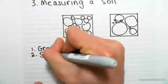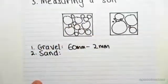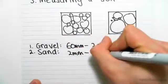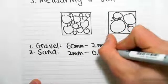The second we have is sand. Sand has particle sizes from 2mm to 0.06mm.